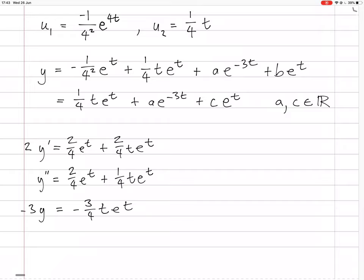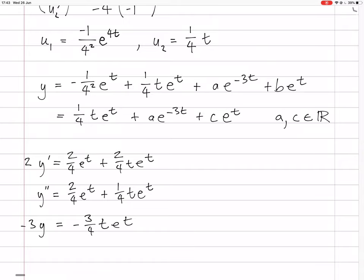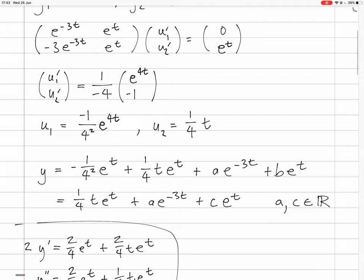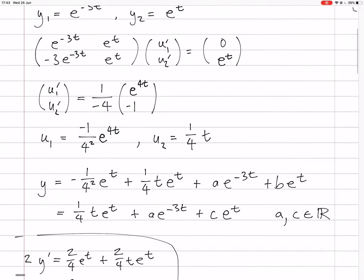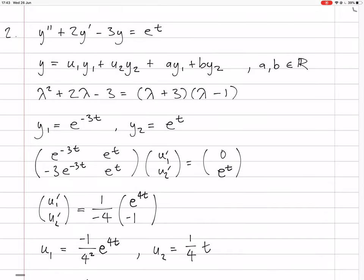And the t e^t terms, they do cancel. Perfect, so we get e^t as we meant to get. So this (1/4)t e^t thing really is a solution to the non-homogeneous equation. That's our general solution. That's it. The solution really is e^t.